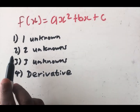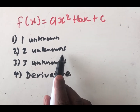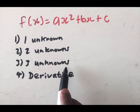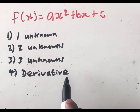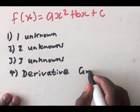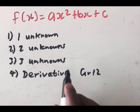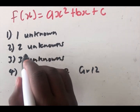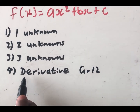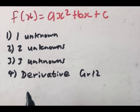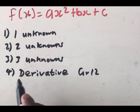The first one is when there is one unknown, which is the easiest. The second one is when there are two unknowns. The third one is when there are three unknowns, and this one is very important. The last one is the derivative — that is the grade 12 part. In this particular video, I'm going to show you how to deal with the first three, and I'm going to put the link to the fourth one in the description below, and you'll also find it at the end of the video.